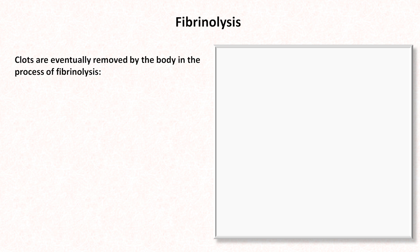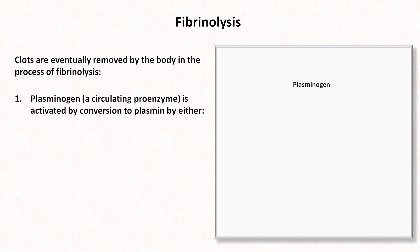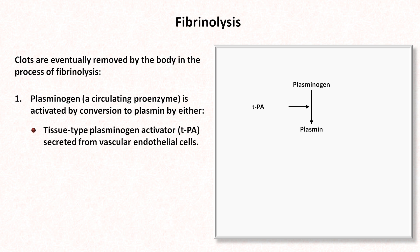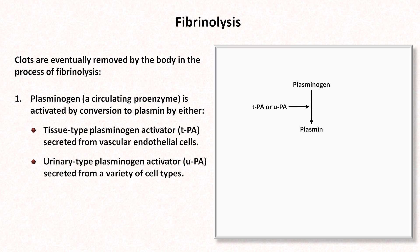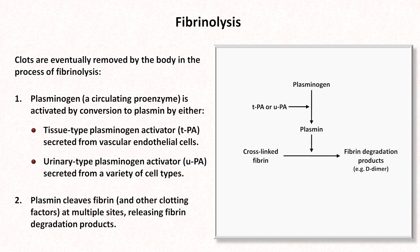As amazing as clot formation is, we don't necessarily want blood clots to hang around forever. Eventually we need our blood vessels to become patent again. Clots are eventually removed by the body in the process of fibrinolysis. There are two major steps. First, plasminogen, which is a circulating proenzyme, is activated by conversion to plasmin by one of two similar enzymes: tissue type plasminogen activator, also known as TPA, which is secreted from vascular cells and itself activated by thrombin; or urinary type plasminogen activator, also known as urokinase or UPA, which is secreted from a variety of cell types. Plasmin then cleaves cross-linked fibrin, essentially severing the fibrin threads holding the blood clot together. This results in a variety of fragments known as fibrin degradation products, one of which is the D-dimer, which is composed of two D-domains from adjacent fibrin monomers which are linked together.